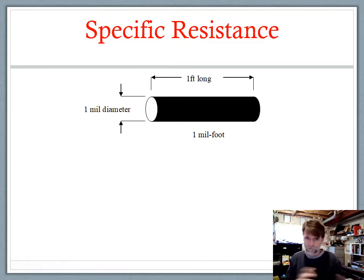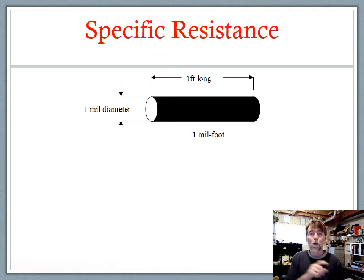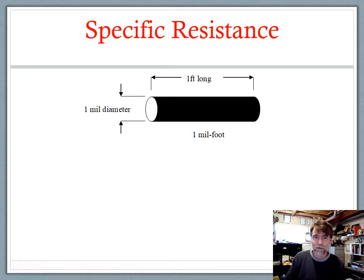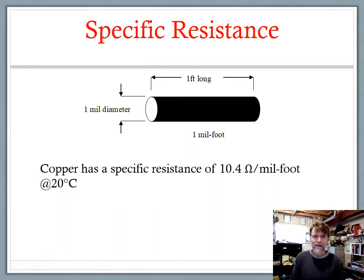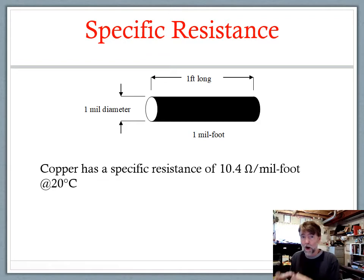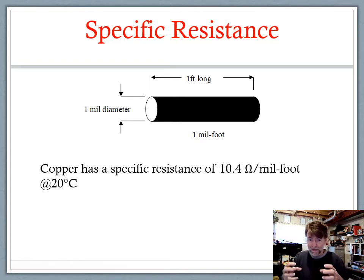Whether we talk about a diameter of one mil or a circular mil area of one circular mil, it's the same — that is the cross-sectional area of the conductor, and it's one foot long. This is an incredibly tiny conductor, but these are the conditions at which we can specify the exact resistance of the conductor so we can compare different conductors. For copper, the specific resistance is 10.4 ohms per mil foot at 20 degrees Celsius. If we control all the variables — diameter, length, and temperature — specified as one mil in diameter, one foot long at 20 degrees, the resistance that conductor offers is 10.4 ohms.